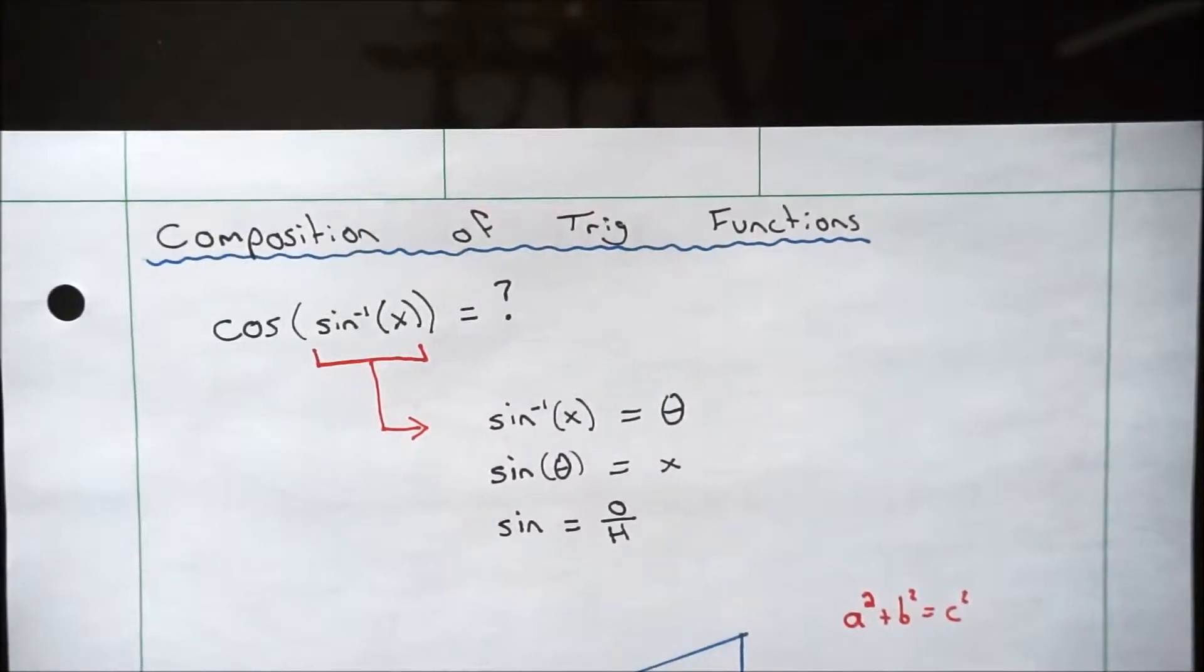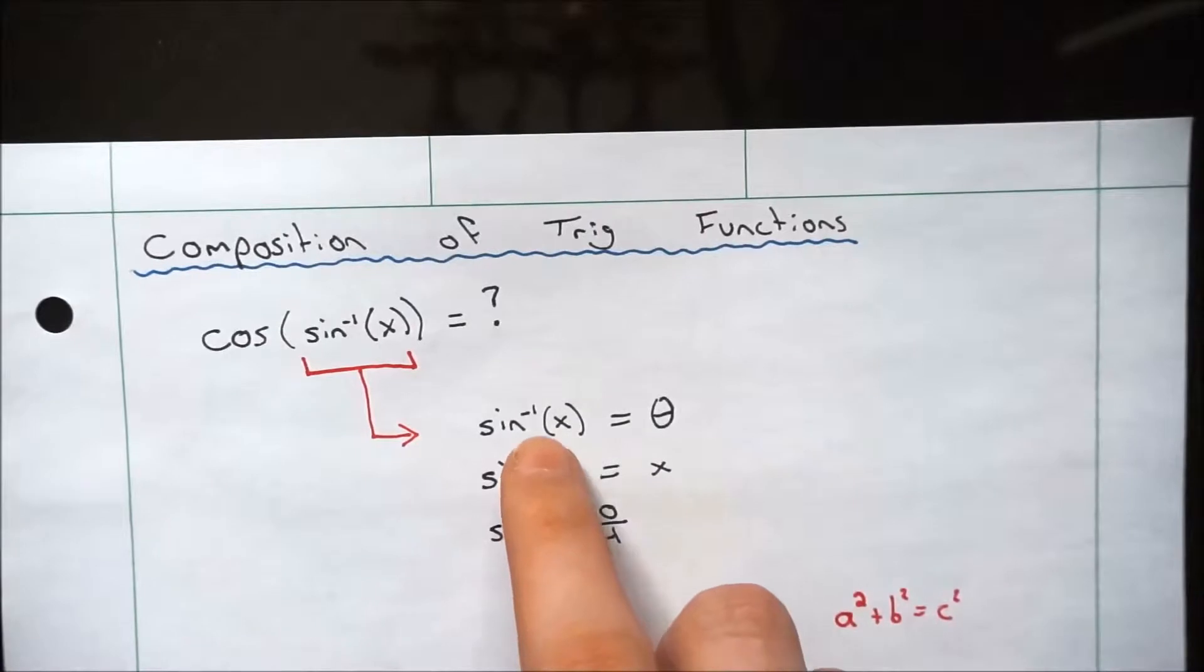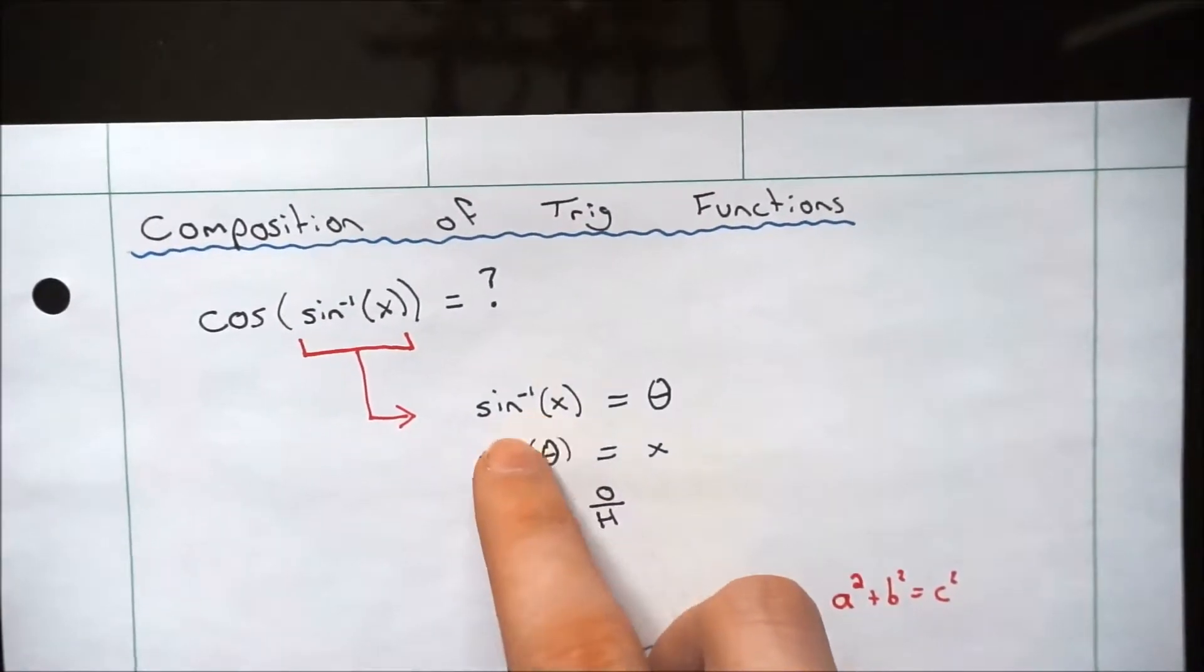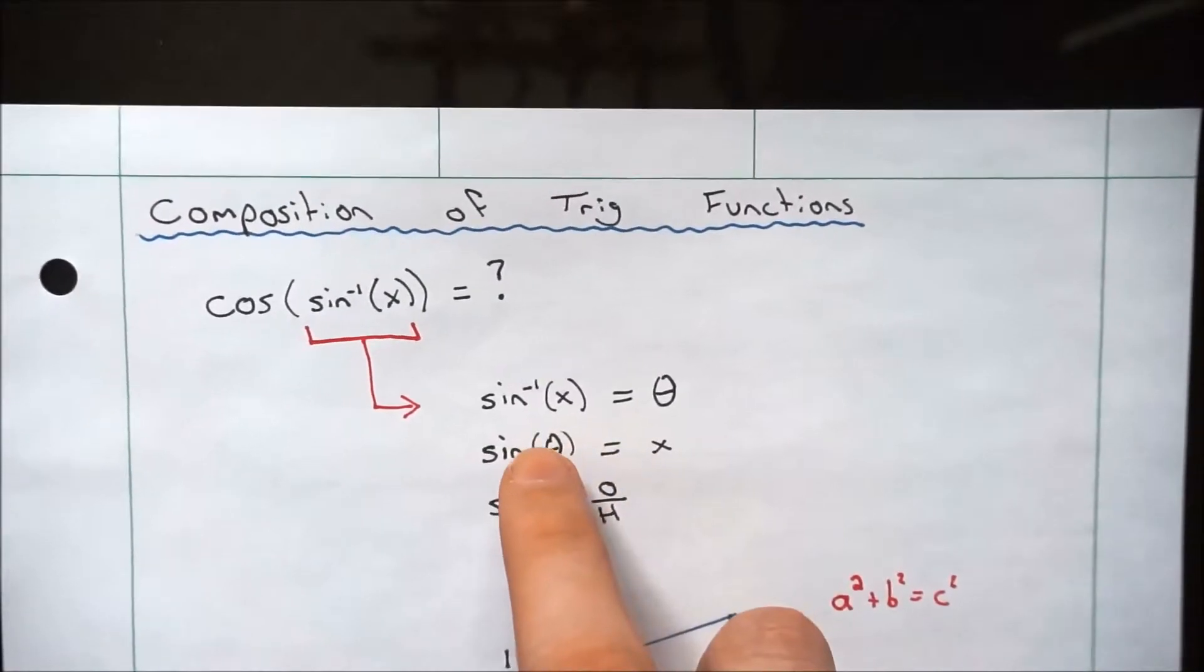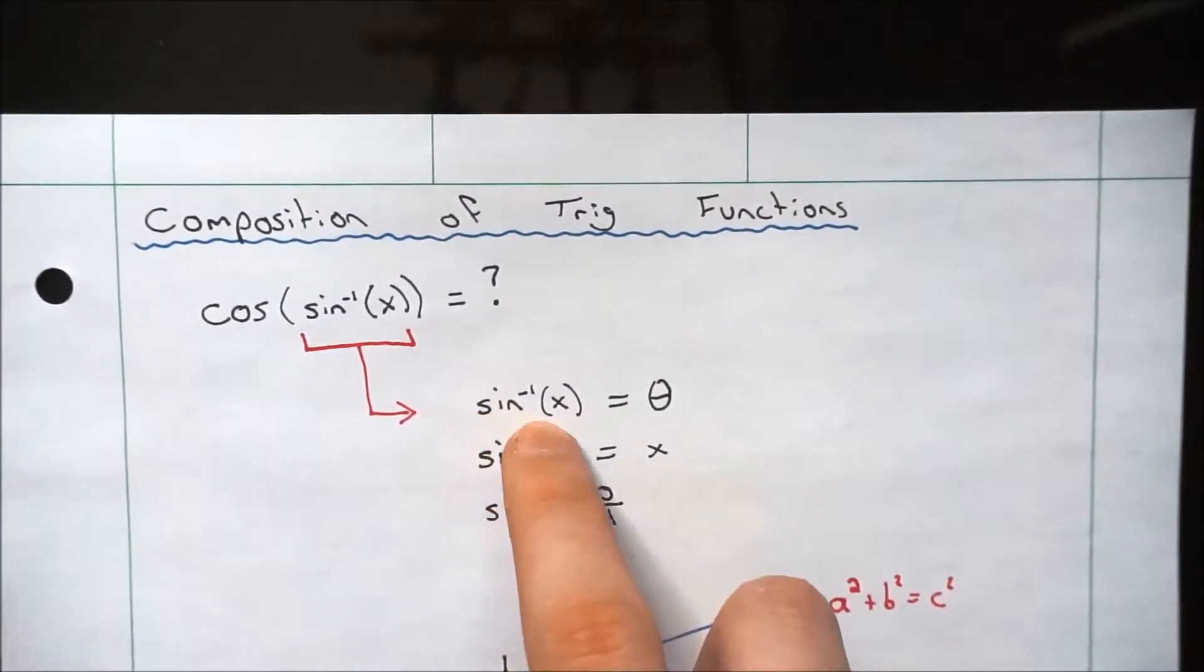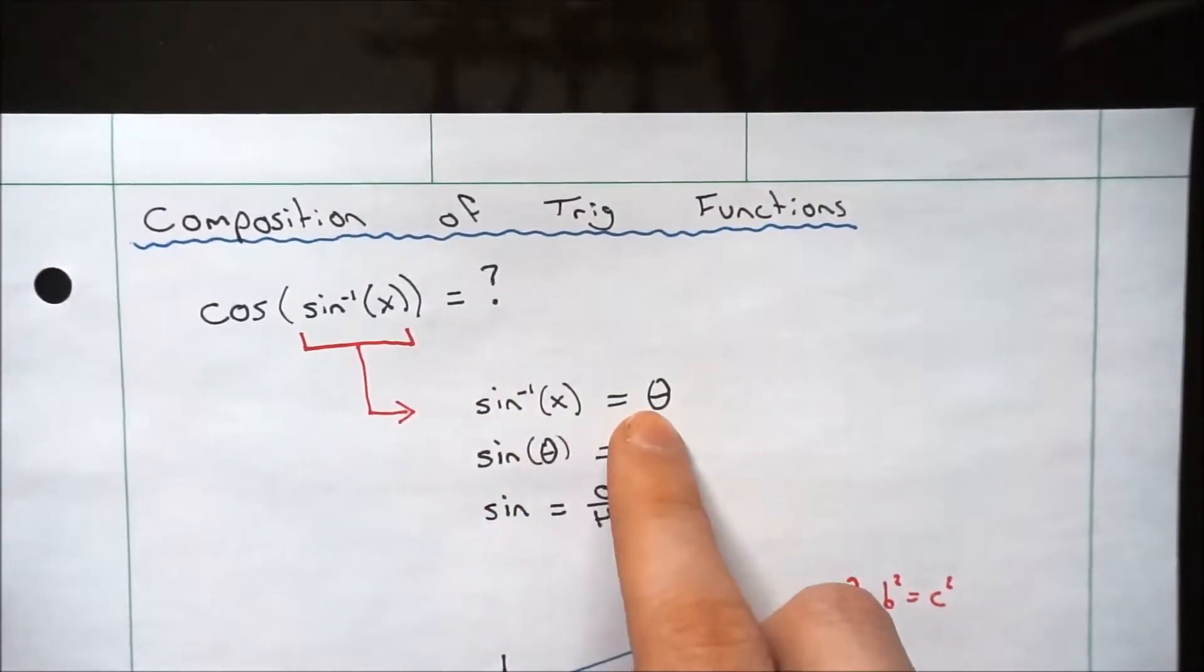So the first thing that you're going to do is look at what's in the brackets. Here we have the cosine of the arc sine of x. So we pull the arc sine of x out, and when you're taking the arc sine of anything, it's just going to give you an angle. That's just the way that trig works. You take the arc sine of some ratio of the sides, and it gives you an angle.